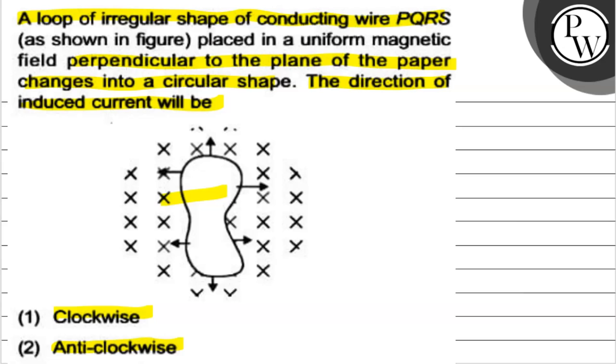We know that when a conducting wire carries current in a magnetic field, and according to this, the loop shape changes into circular shape. This means area increases, so obviously flux linked to this loop increases.